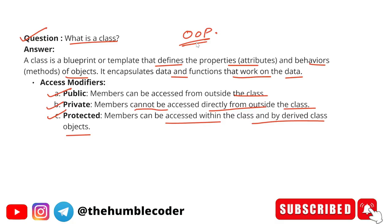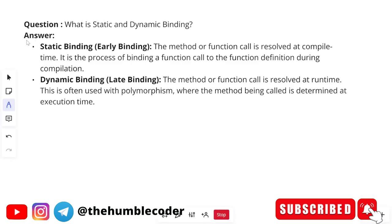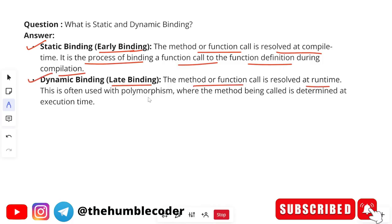What is static and dynamic binding? Static binding is also called early binding — the method or function call is resolved at compile time. It is the process of binding a function call to the function definition during compilation. Dynamic binding is also called late binding — the method or function call is resolved at runtime. This is often used with polymorphism, where the method being called is determined at execution time.